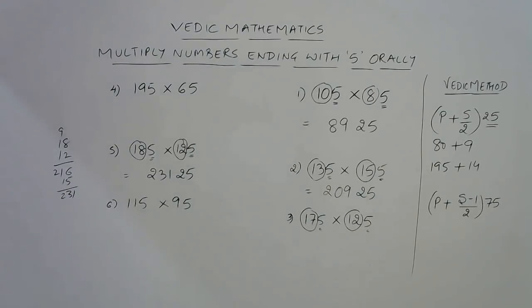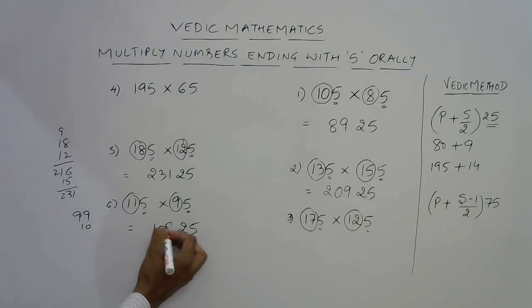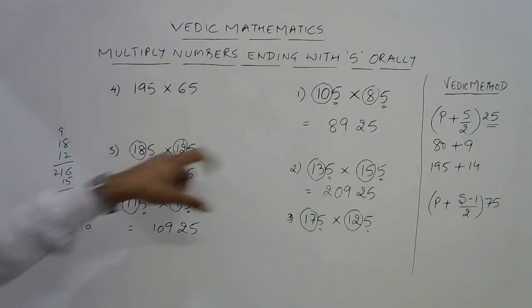Another even sum: 5 and 5, leaving 11 and 9. Your answer will end again with 25. 11 into 9 is 99, and 11 plus 9 is 20, half of that is 10. So 10925 is the answer.